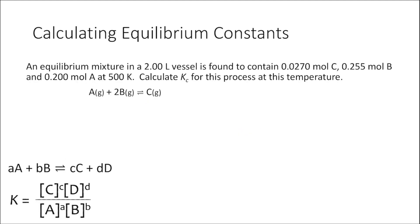Let's try one more. We have an equilibrium mixture in a 2-liter vessel found to contain a certain number of moles of our product and a certain number of moles of each of our reactants at 500 Kelvin. Let's calculate the equilibrium constant for this process at this temperature. The temperature doesn't affect how we calculate the equilibrium constant — we should just remember that equilibrium constants are specific for a given reaction at a given temperature.